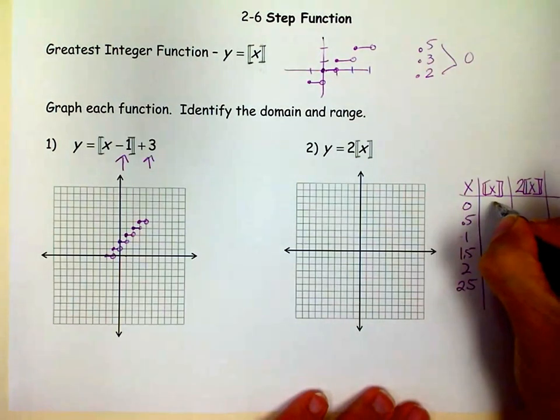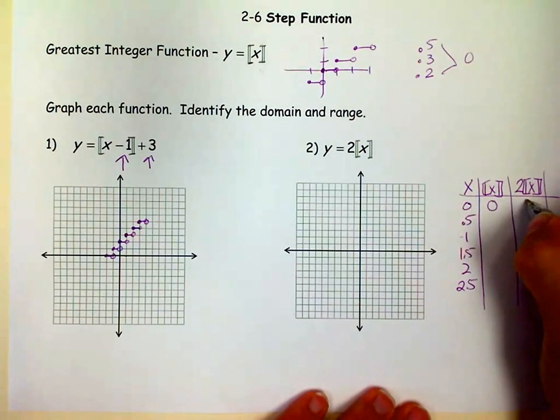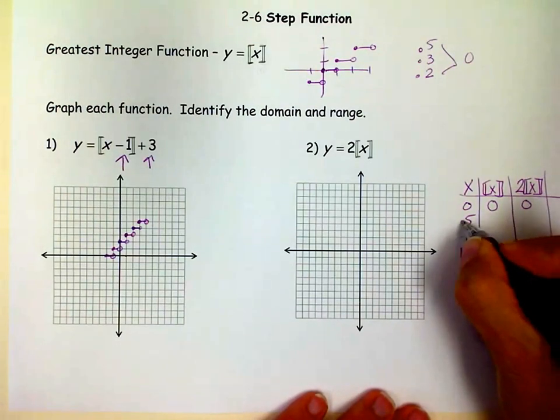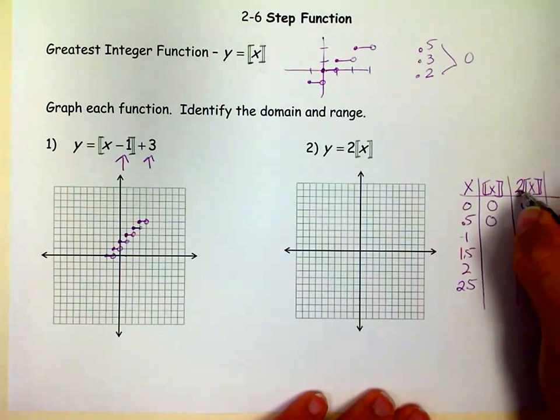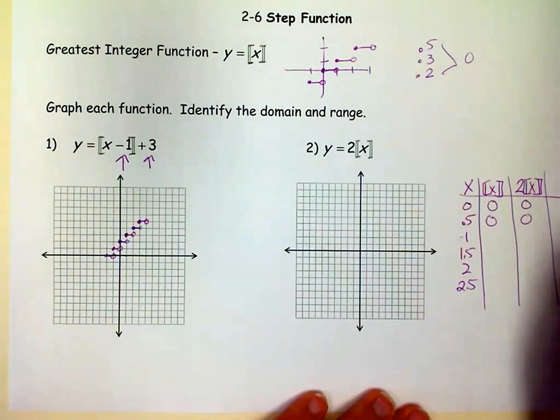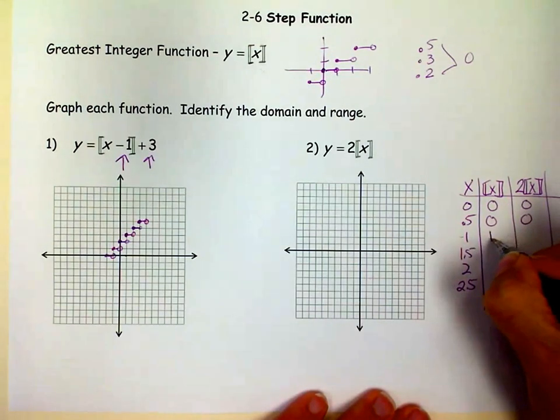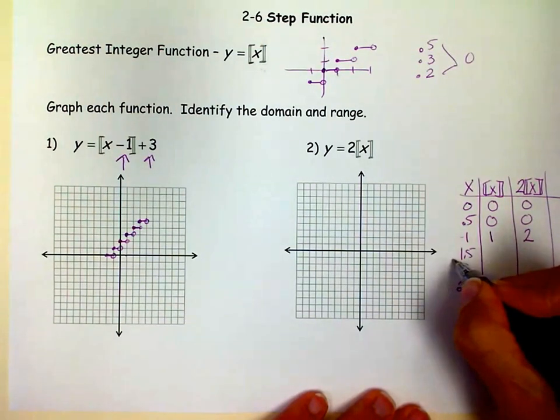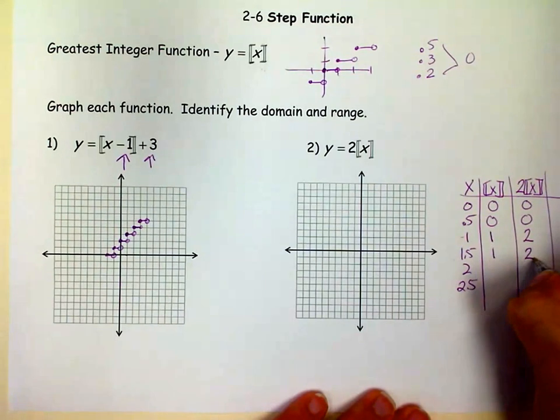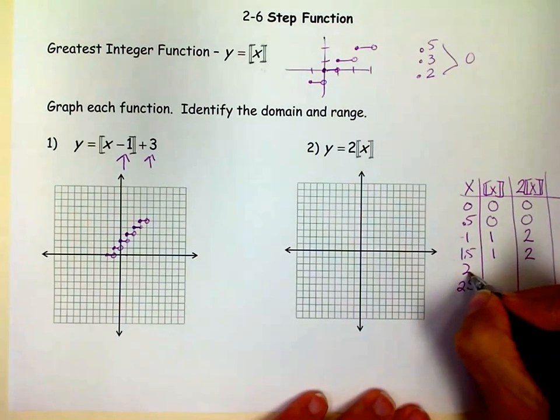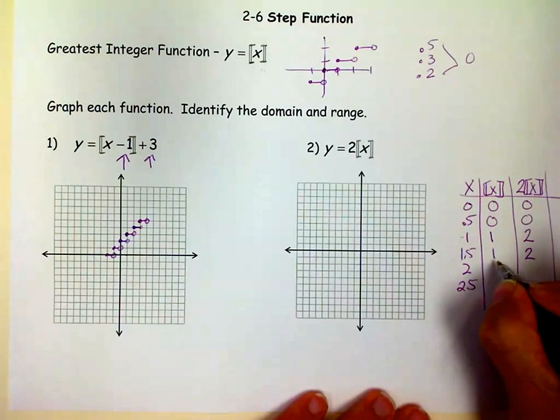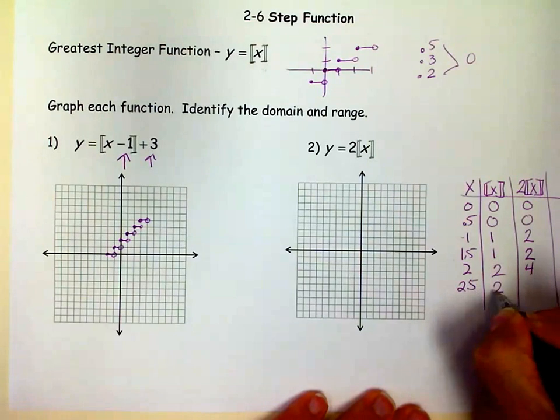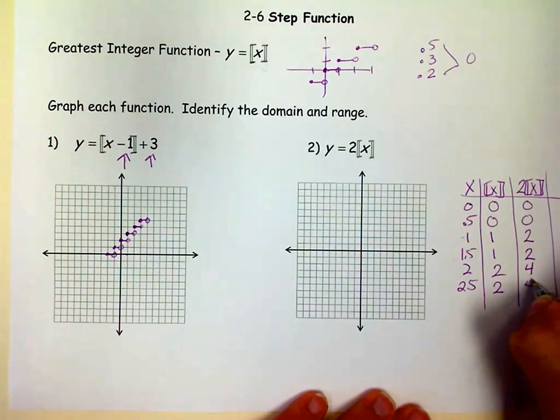So if I'm at 0, obviously this is 0, and 2 times 0 is 0. But if I'm at a half, remember it goes to the integer below a half. So that means 0, and again 2 times 0 is 0. If I'm at 1, then this is 1, and 2 times 1 is 2. But if I'm at 1 and a half, I go to the integer below it, which is 1. So I'm still at 2 over here. And then at 2, I'm at 2, which would be 4. And at 2.5, I'd still be at 2, and then I'd be still at 4.